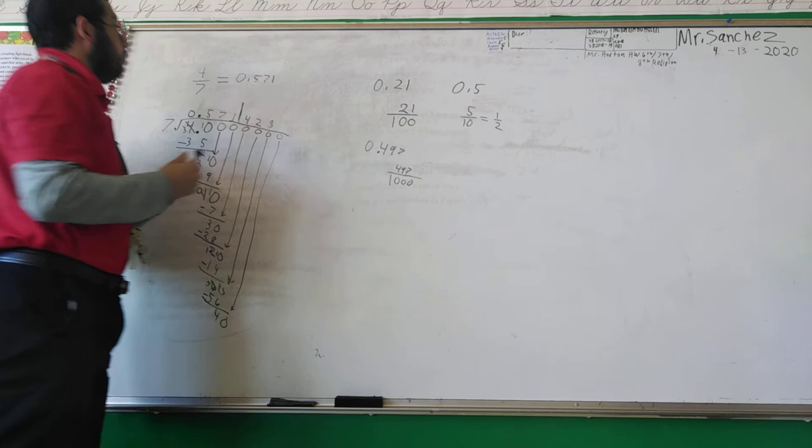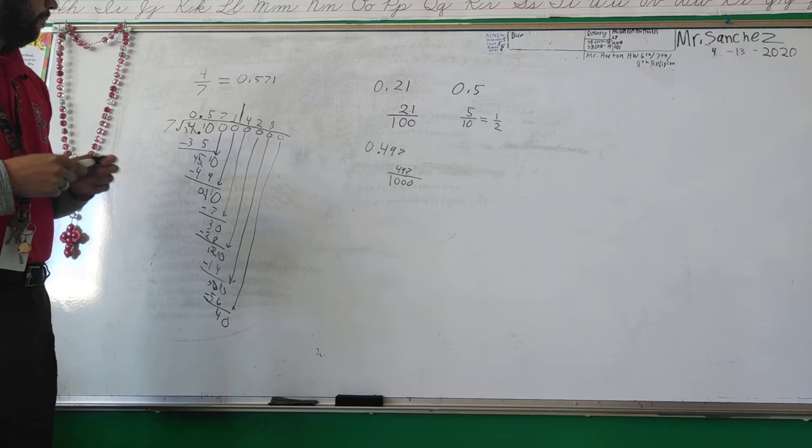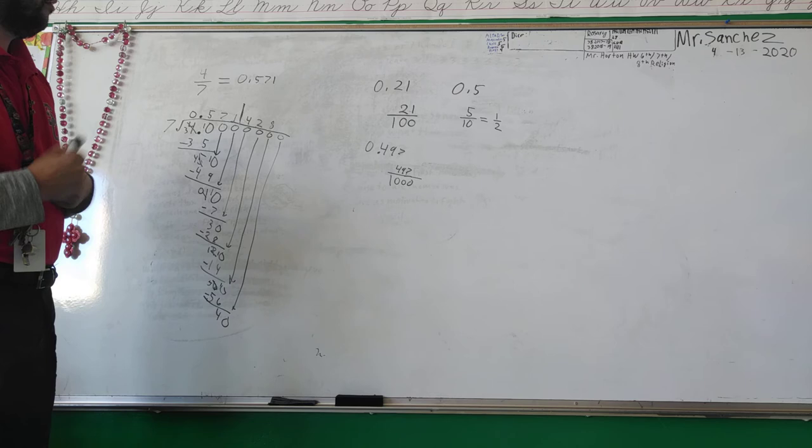And, I just kept going and going like my normal division. And, thus, our answer to this would be 0.571. Good enough. So, that's what you'll be doing this week. You're going to be converting these. Now, I know you may be asking.